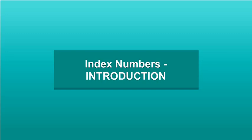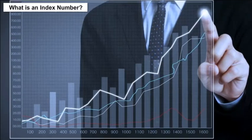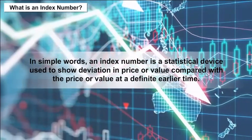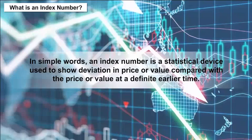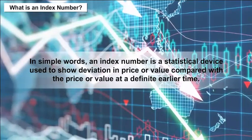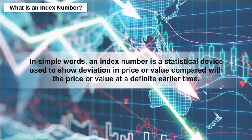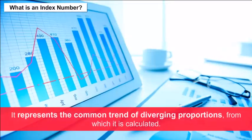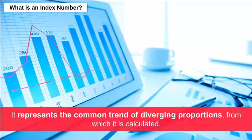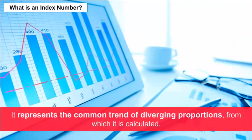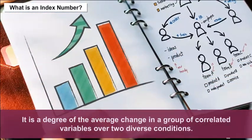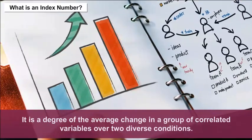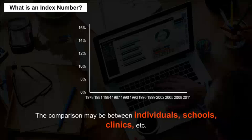Index Numbers — Introduction. What is an index number? In simple words, an index number is a statistical device used to show deviation in price or value compared with the price or value at a definite earlier time. It represents the common trend of diverging proportions from which it is calculated. It is a degree of the average change in a group of correlated variables over two diverse conditions.